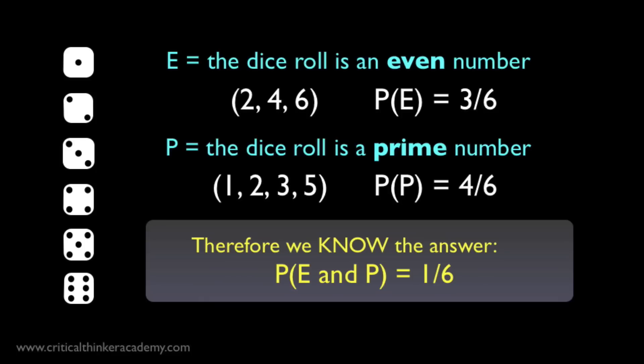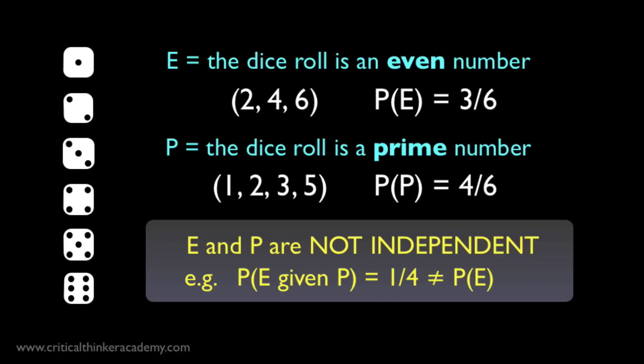This example shows us that the restricted conjunction rule doesn't apply in this case. Why doesn't it apply? It doesn't apply because E and P are not independent events. We're interested in the probability that E and P are both true of a given dice roll. But if P is true — if we know the dice roll is a prime — then that affects the probability that E is true, that it's even. If it's prime, just look at the options: there's only one even number in that list of 4 prime numbers, so the probability of the roll being even is 1 in 4, not 1 in 2.